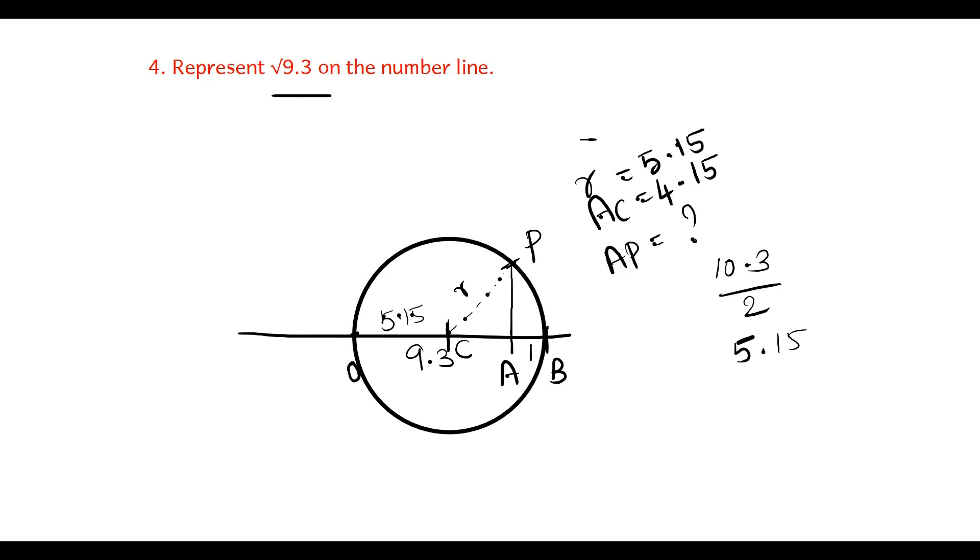Hypotenuse square equal to adjacent square plus opposite square, that is AC square plus AP square. Hypotenuse is the radius, which is 5.15 square, equal to 4.15 square plus AP square.